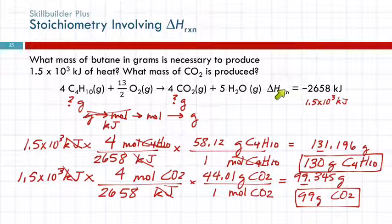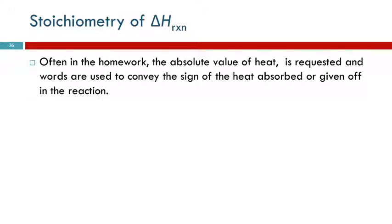This delta H is a conversion factor relating moles of something in that equation to the amount of energy released or absorbed. So often in the homework, you need to use the absolute value of heat. It will ask you to calculate the heat because words are used. So it will say calculate the amount of heat released. Then you express it as a positive number. Calculate the amount of heat absorbed. You're still going to express it as a positive number.